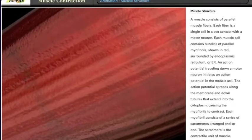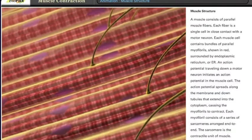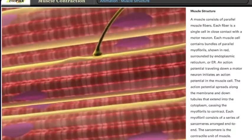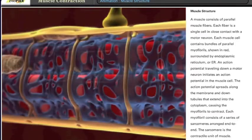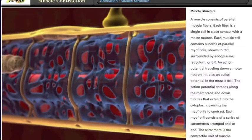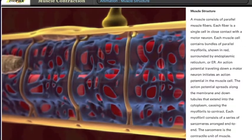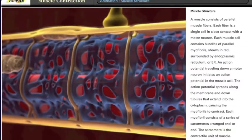A muscle consists of parallel muscle fibers. Each fiber is a single cell in close contact with a motor neuron. Each muscle cell contains bundles of parallel myofibrils, shown in red, surrounded by endoplasmic reticulum, or ER.